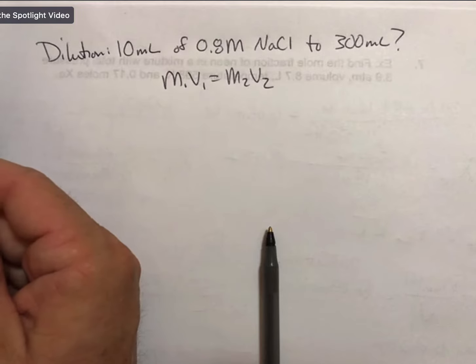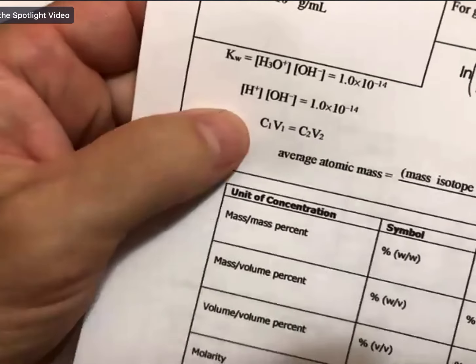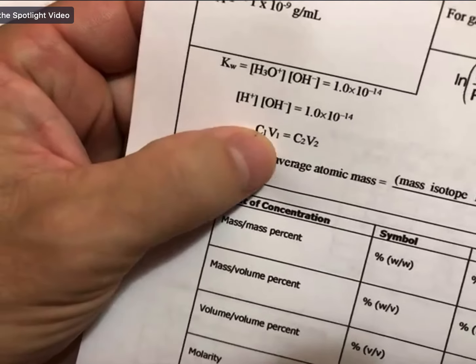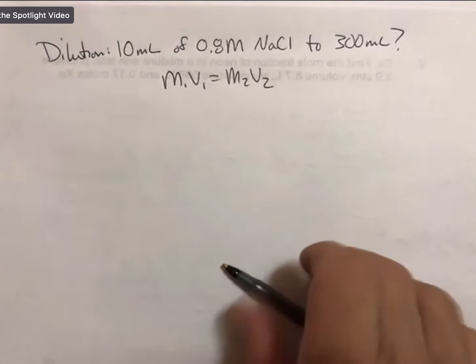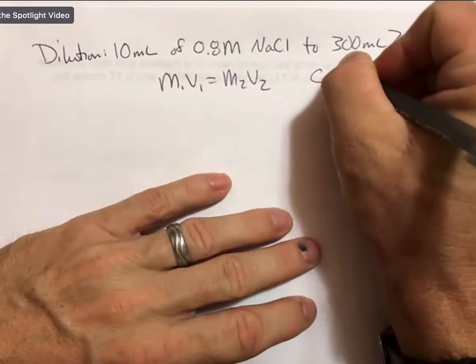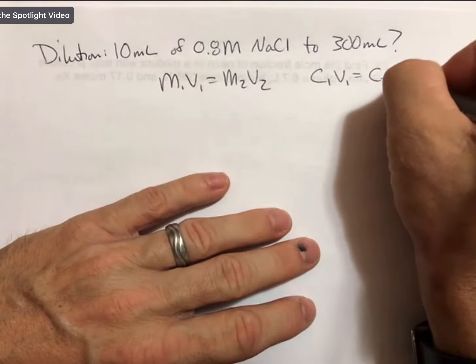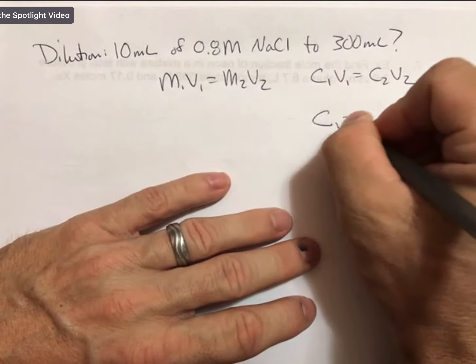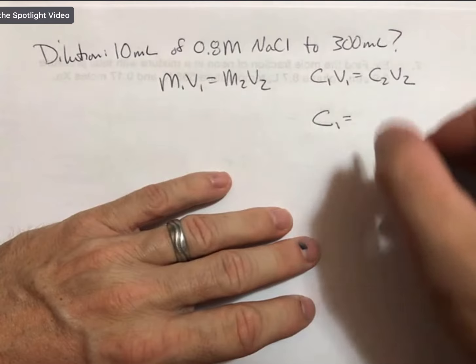It's on your conversion and equation sheets a little differently. It says C1V1 equals C2V2, where C1 is the concentration of solution 1.